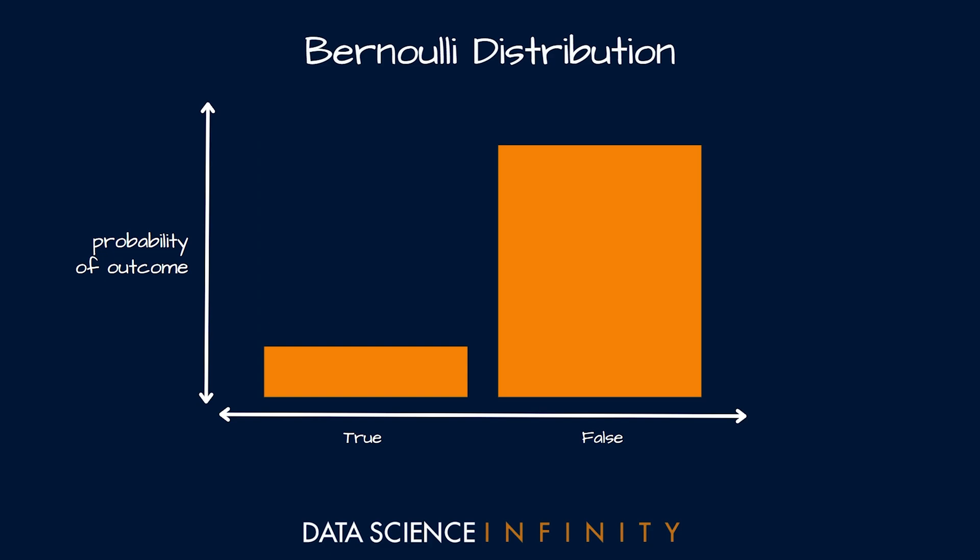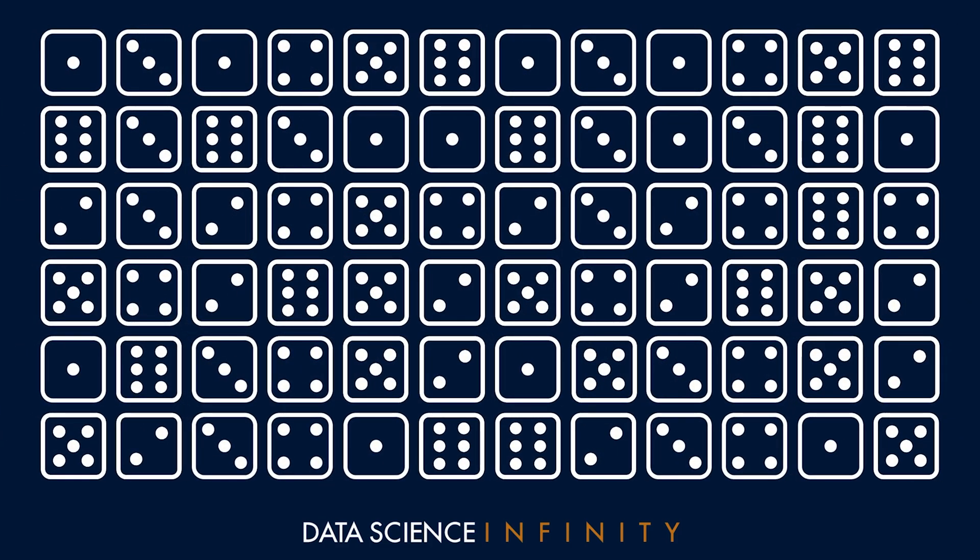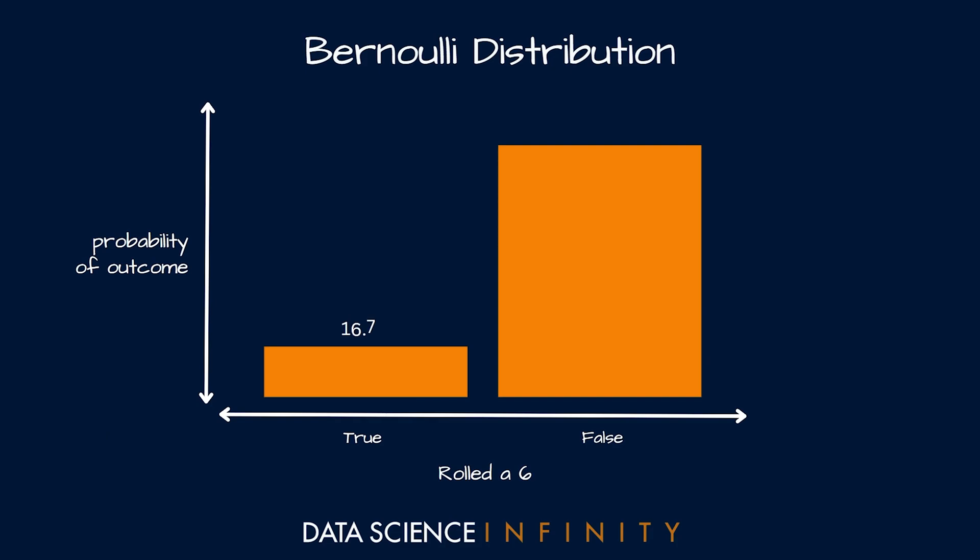Let's imagine a super simple experiment where we wanted to understand how likely we were to roll a six with a dice. To figure this out, if we went and rolled a dice many many many times and measured how many times we did indeed roll a six, if we did this enough times we should end up with a probability of rolling a six one out of every six times, or 16.7%, and we should get a probability of not rolling a six—in other words rolling a 1, 2, 3, 4, or 5—five times out of six, or 83.3% of the time. So that is the Bernoulli distribution, quite a simple one but definitely worth knowing the name.